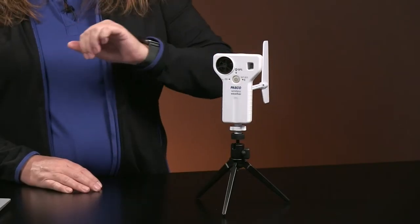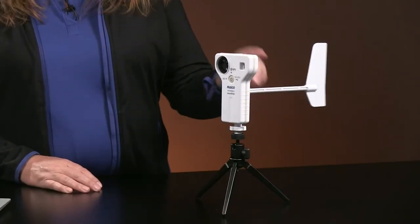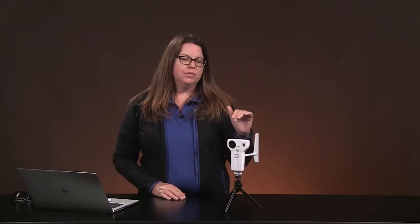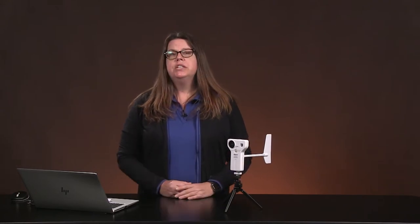So today, to do this investigation, you're going to need a weather sensor with GPS, and it's optional to use the weather vane, especially if you're collecting any wind speed or directional data, but you don't necessarily need it. And then, of course, you're going to need the SparkView software. Now, when I collected the sample data that you're going to have access to, I used my cell phone, and I downloaded the SparkView software onto my phone, and that way I was able to take it outside.